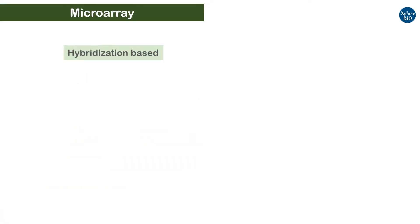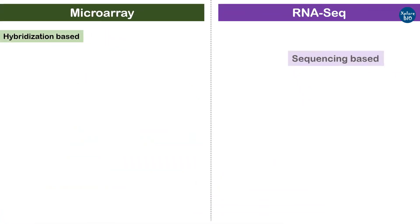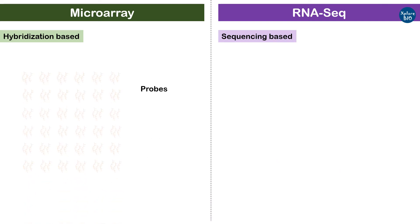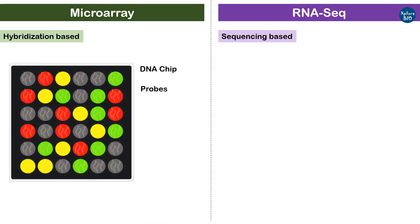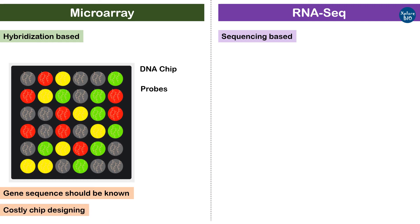There are two major ways to study a transcriptome. The first is a hybridization-based microarray technique, and the other is the sequencing-based RNA-seq technique. In microarray, a predetermined set of probes representing sequences of gene fragments are fixed on a solid chip. The major limitation of this technique is that the gene sequence needs to be known for designing the chip. Thus, for non-model species that lack genomic sequence information, microarray is not a viable option, as chips are not readily available and designing a genetic chip is very costly.